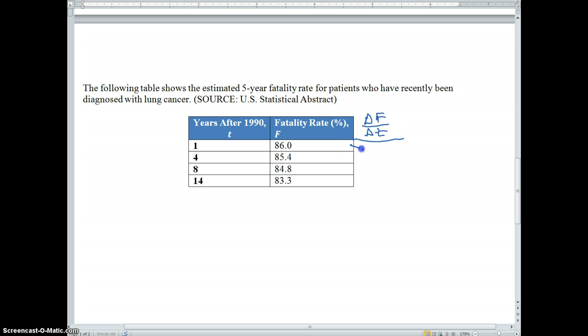I'm going to look at a column that looks at the change in the fatality rate over the change in time. I'm going to look at pairs of side-by-side values here. Between 1991 and 1994, the fatality rate dropped by 0.6. It's a negative 0.6, and that's across three years. Negative 0.6 divided by 3 gives me negative 0.2, and that's percentage points per year.